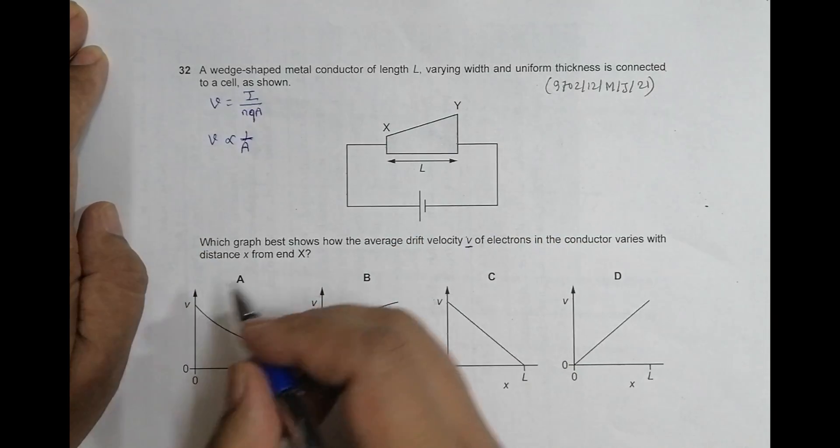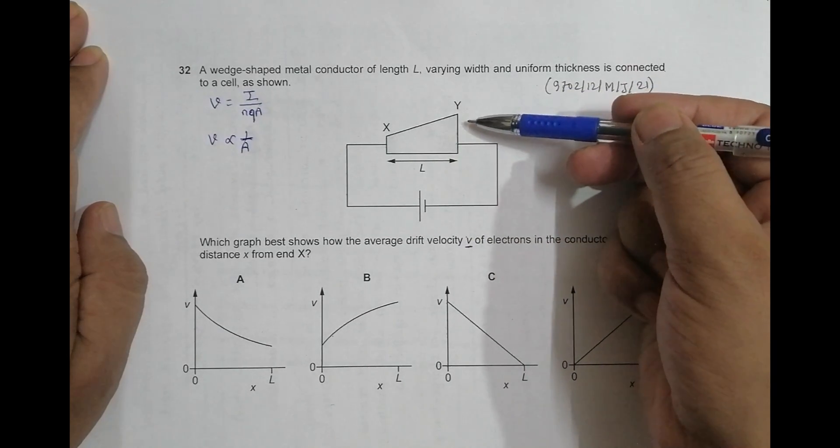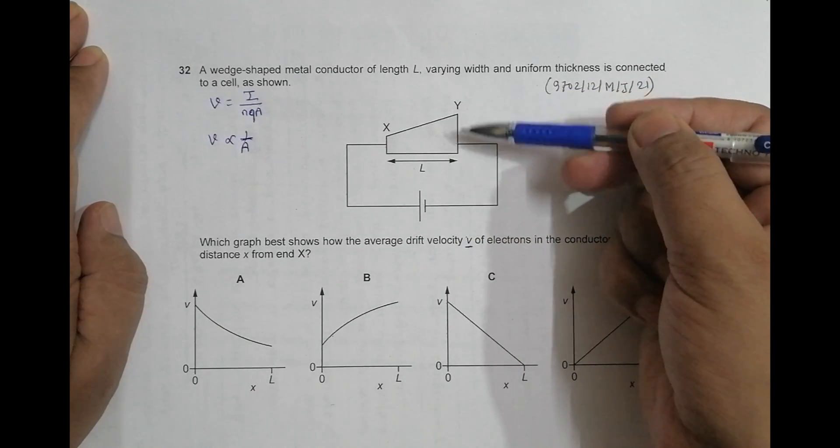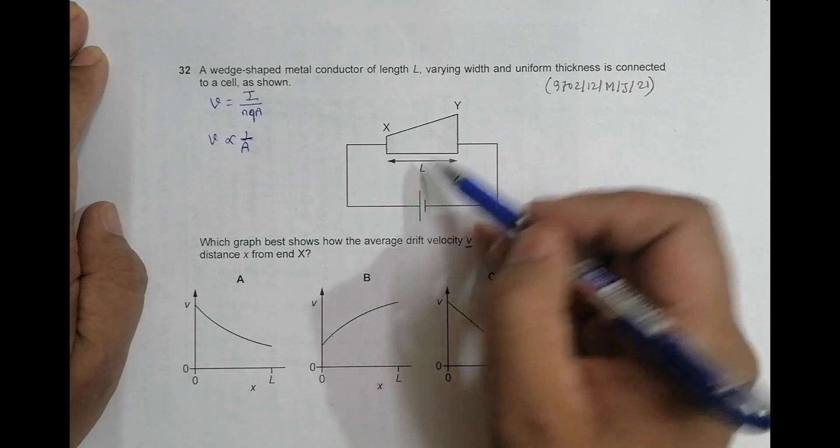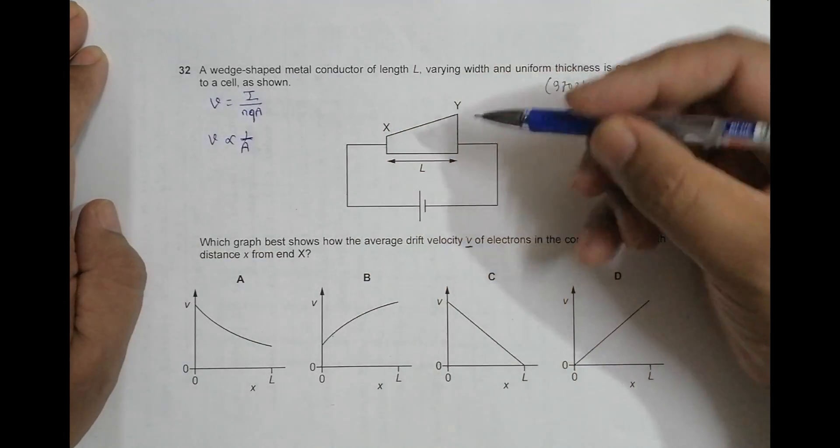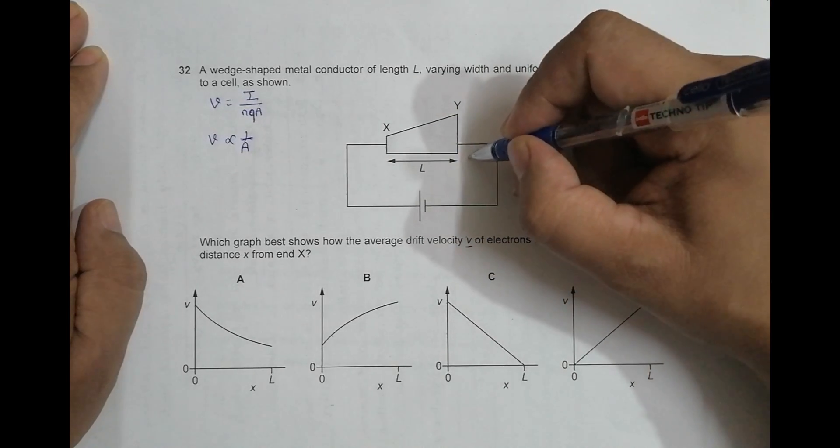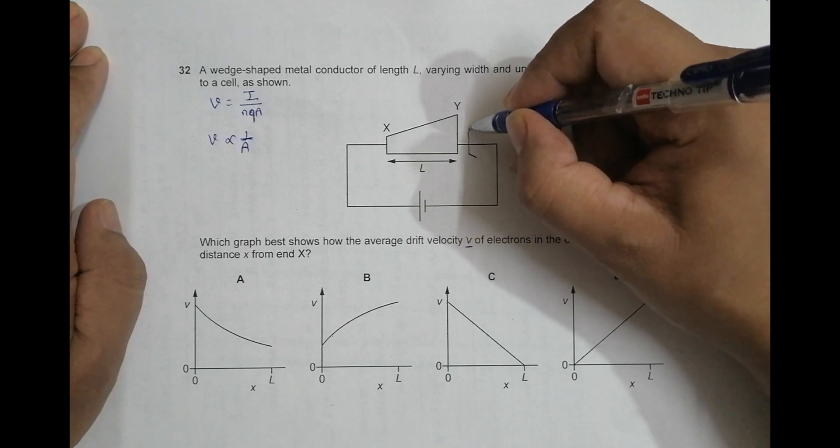Now here what is happening is we have to see the dependence of this cross section with this length. So first what happens is in this cross section we have something like this. We will see something like this.